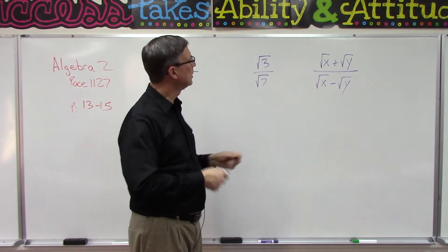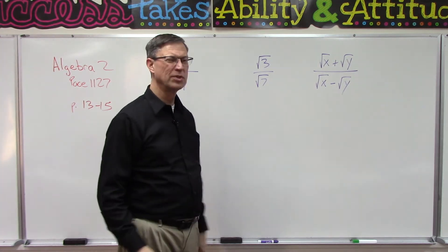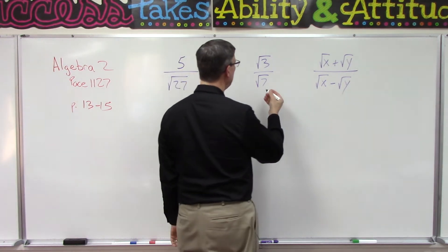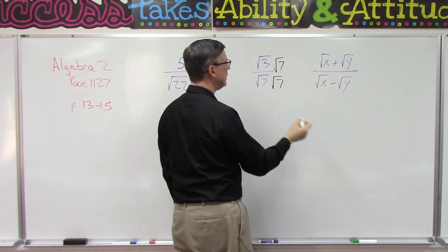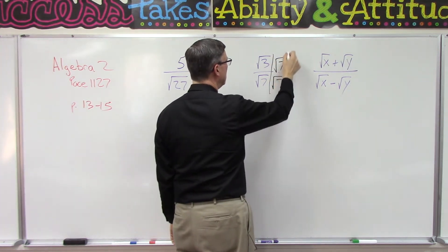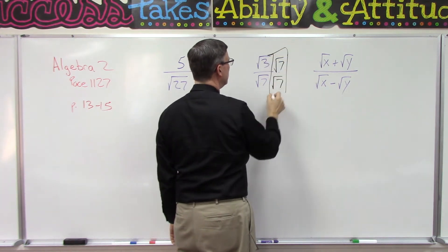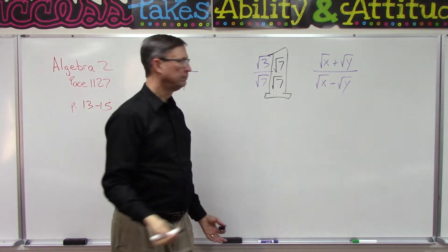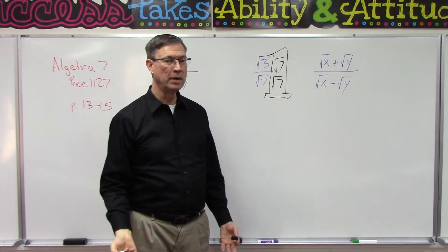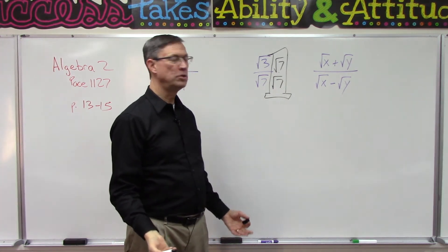Let's take this one first because it's real simple. I'm going to multiply the top and the bottom by the square root of seven. You see I have the numerator and the denominator are the same thing, and anything divided by itself is one, so we're not changing the value, we're just changing the format of this number.